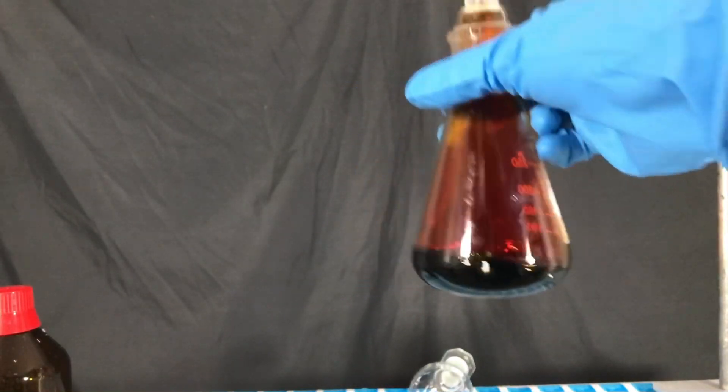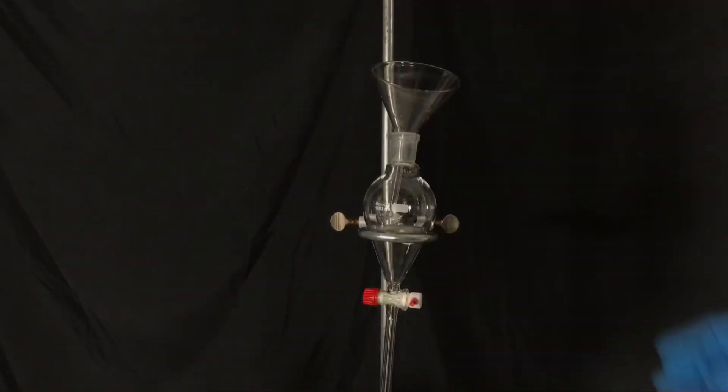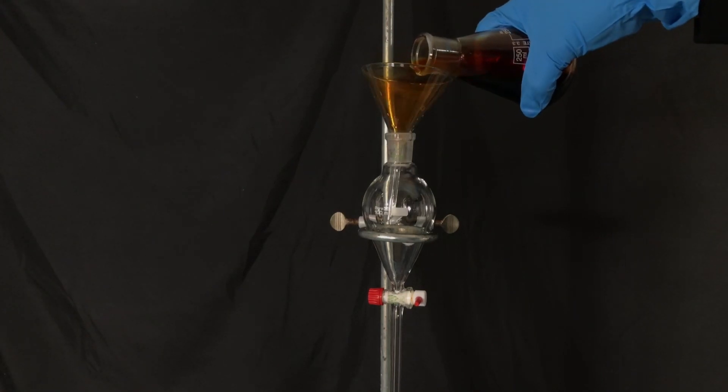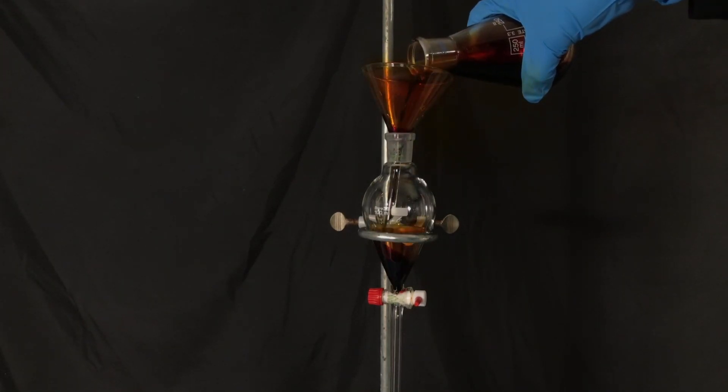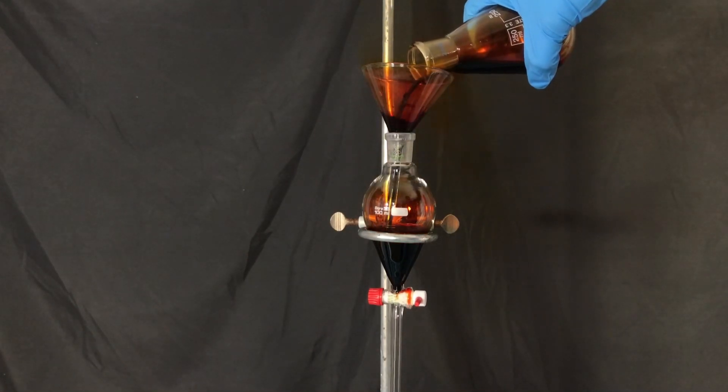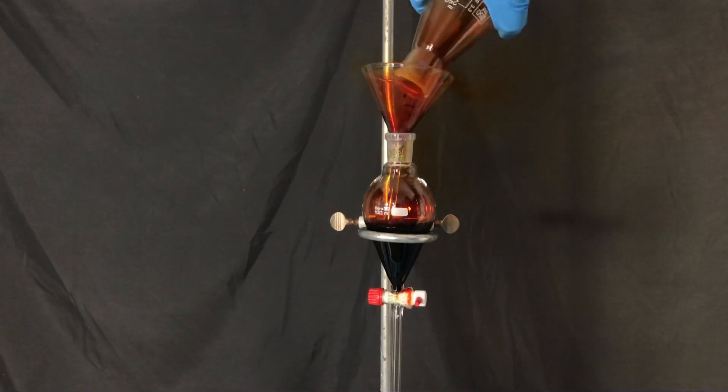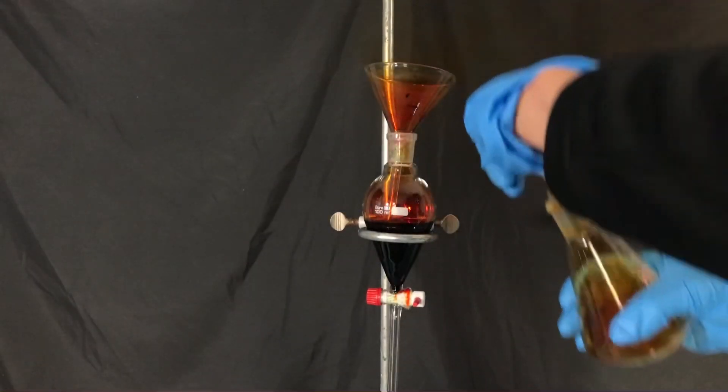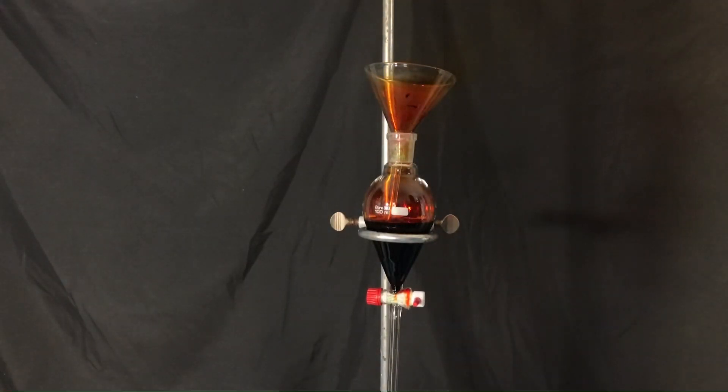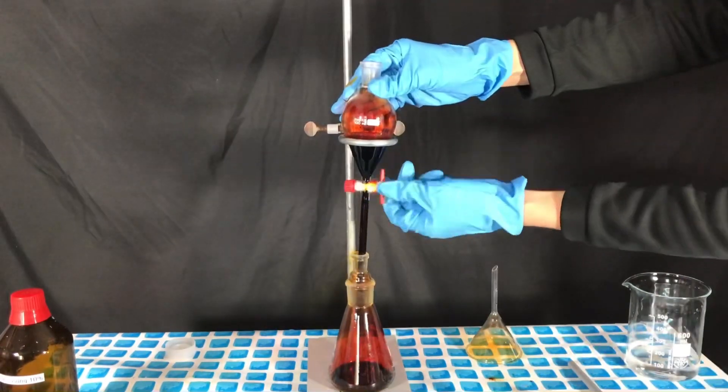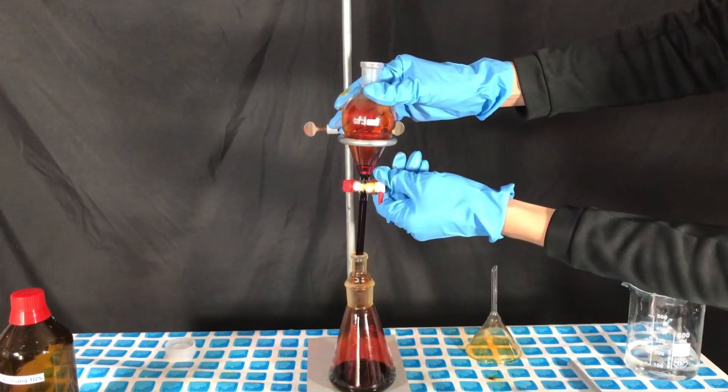This is what the collected bromine looked like. You cannot see it but on top of it there is a thin water layer. To get rid of the water layer the bromine was transferred to a separatory funnel. Here you can see again why this experiment should not be recreated and you see a lot, I mean really a lot, of toxic bromine vapors flowing out of the funnel. Bromine is not to be messed with. The bottom bromine layer was transferred to an Erlenmeyer flask leaving most of the water behind.